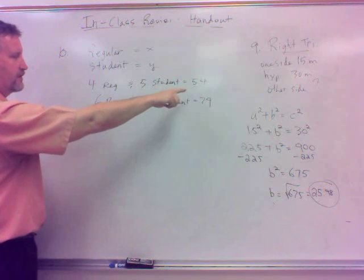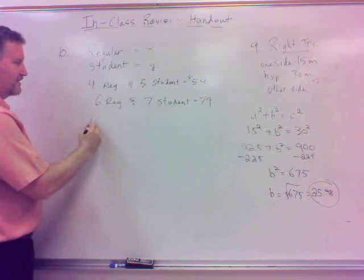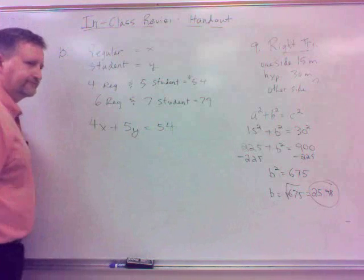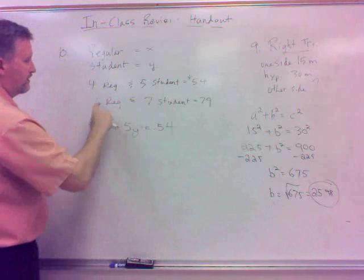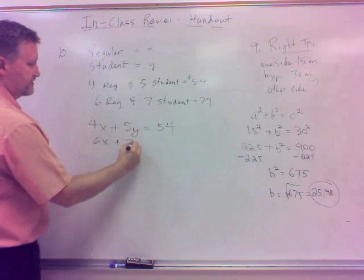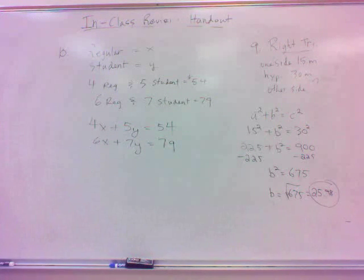Alright. Well, if we say the regular price is x and the student price is y, they're two different prices. What have I got here? I've got two equations, don't I? First equation is four regular, five students equal $54. What equation would that be? 4x plus 5y would equal 54, wouldn't it? Then down here, we've got six regular, so that would be 6x. Seven student would be 7y equals 79.